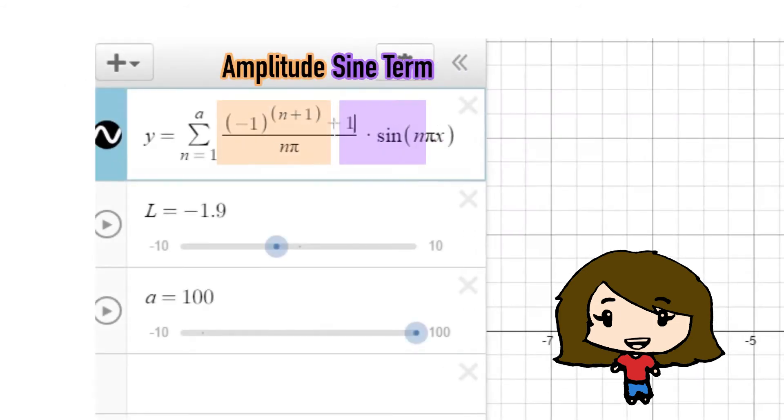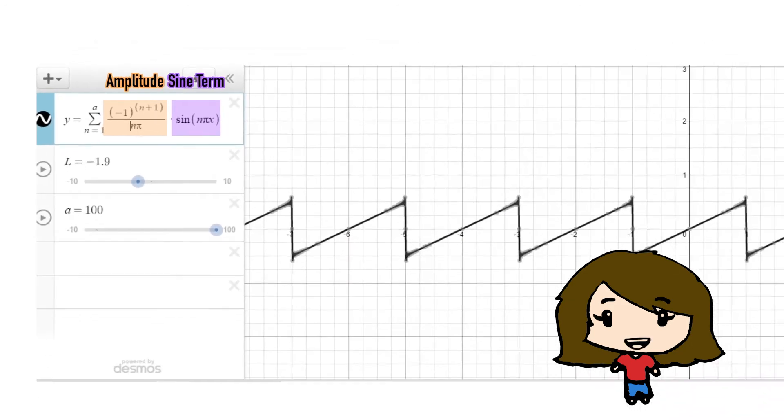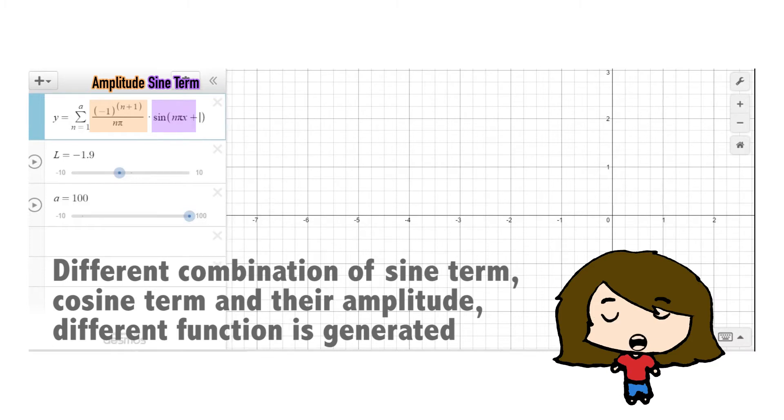We can modify the amplitude of the function. It will generate different graphs. Or we can modify the sine term. With different combinations of sine term, cosine term and their amplitude, different functions are generated.